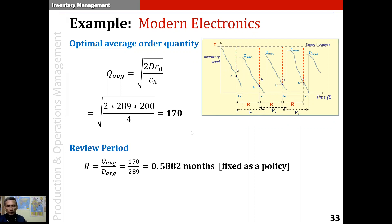Next, the review period R as seen in the figure. The review period is the average order quantity divided by the average demand. The average demand per month is given as 289 units, so 170 / 289 = 0.5882 months. This R = 0.5882 months is fixed as a policy. Given that a month is about 30 days, this would be roughly 17 days or so.